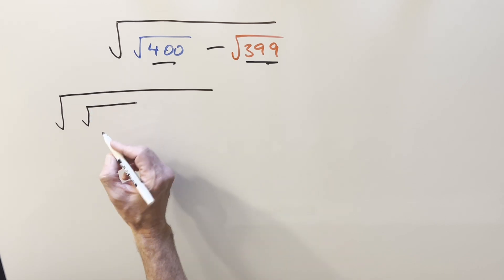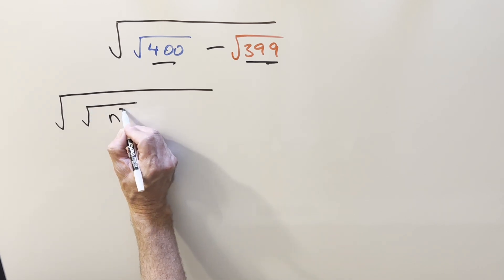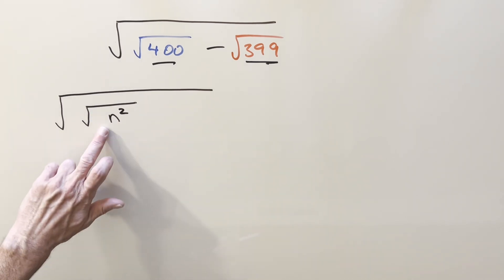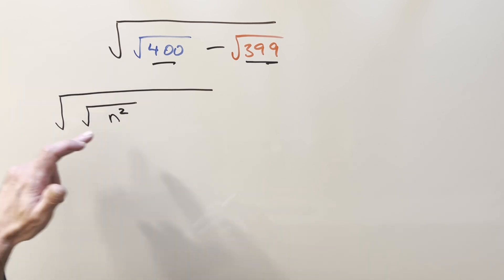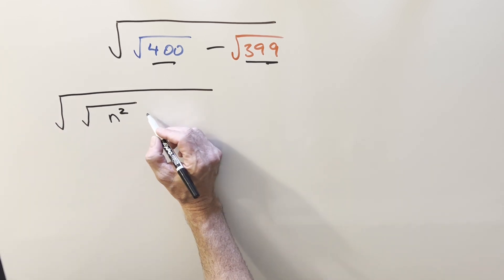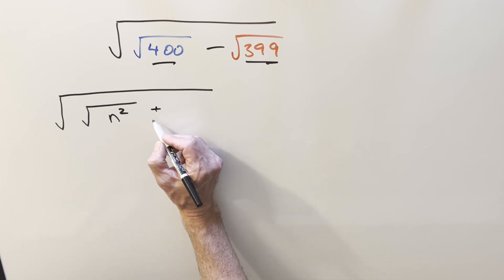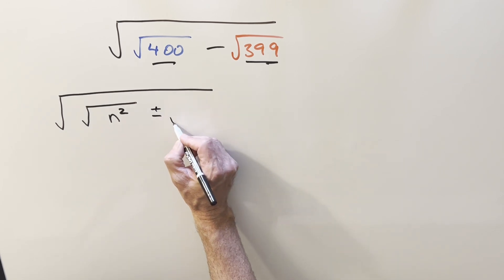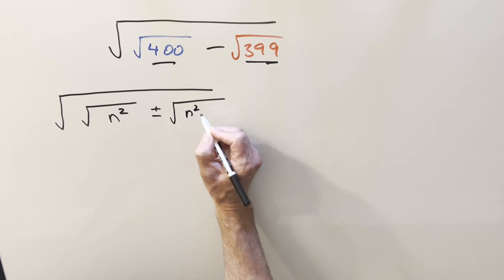So we want, in this position, a perfect square, which I'll call n squared, where n is going to be a positive integer, probably bigger than one. And then here, it doesn't have to be subtraction. Let's do plus or minus. And then this one is going to be n squared minus one.